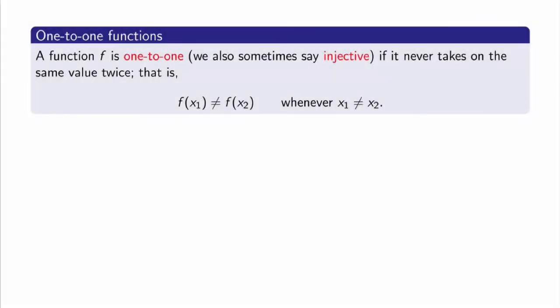In general, to be able to define the inverse of a function F, we must require that F is a one-to-one function. A function F is one-to-one, or injective, if it never takes the same value twice. That means for any two x₁ and x₂ that are different, the output F(x₁) must also be different from F(x₂).